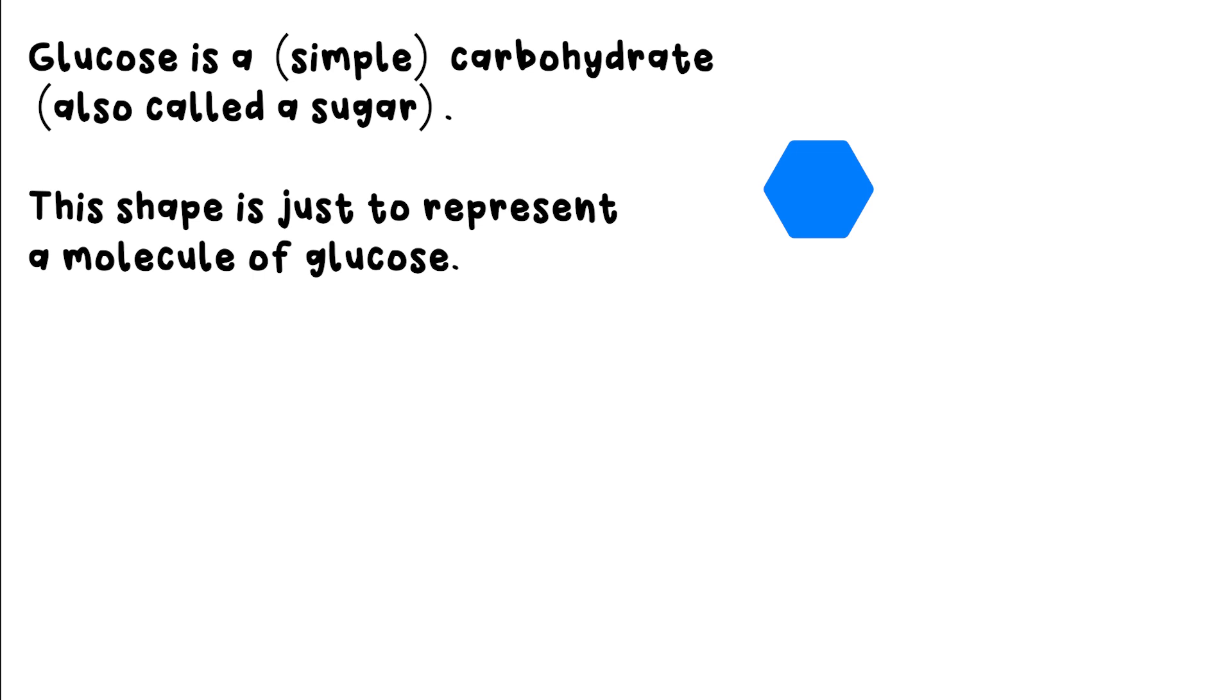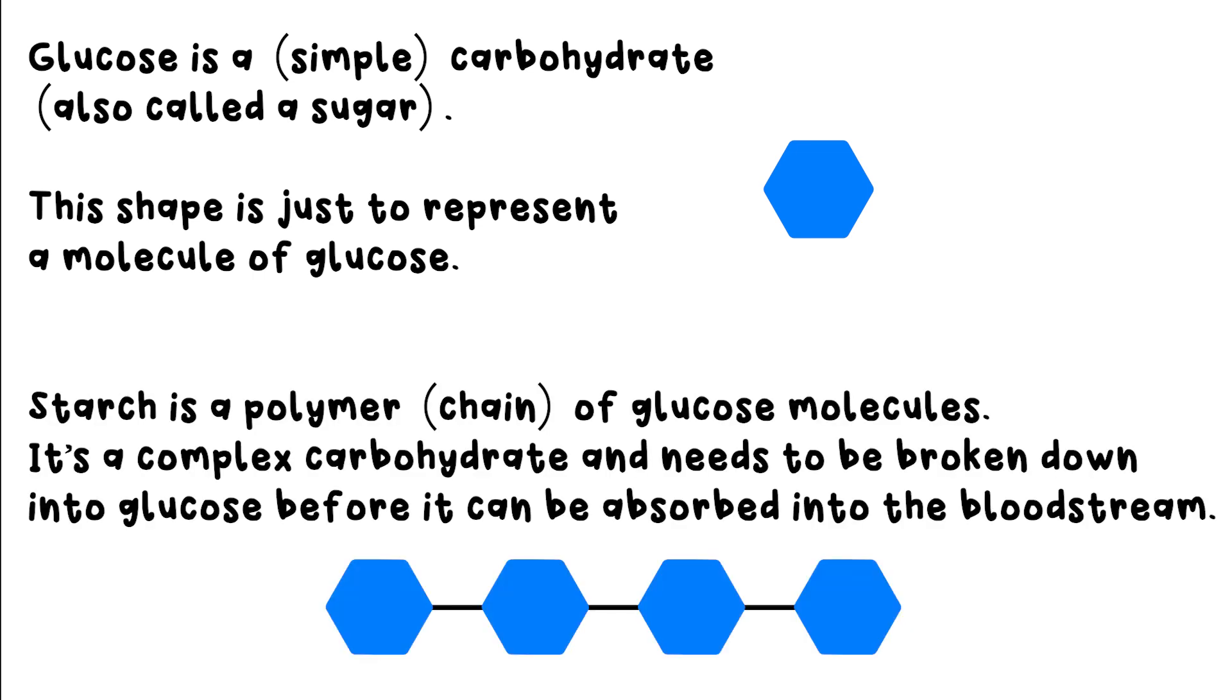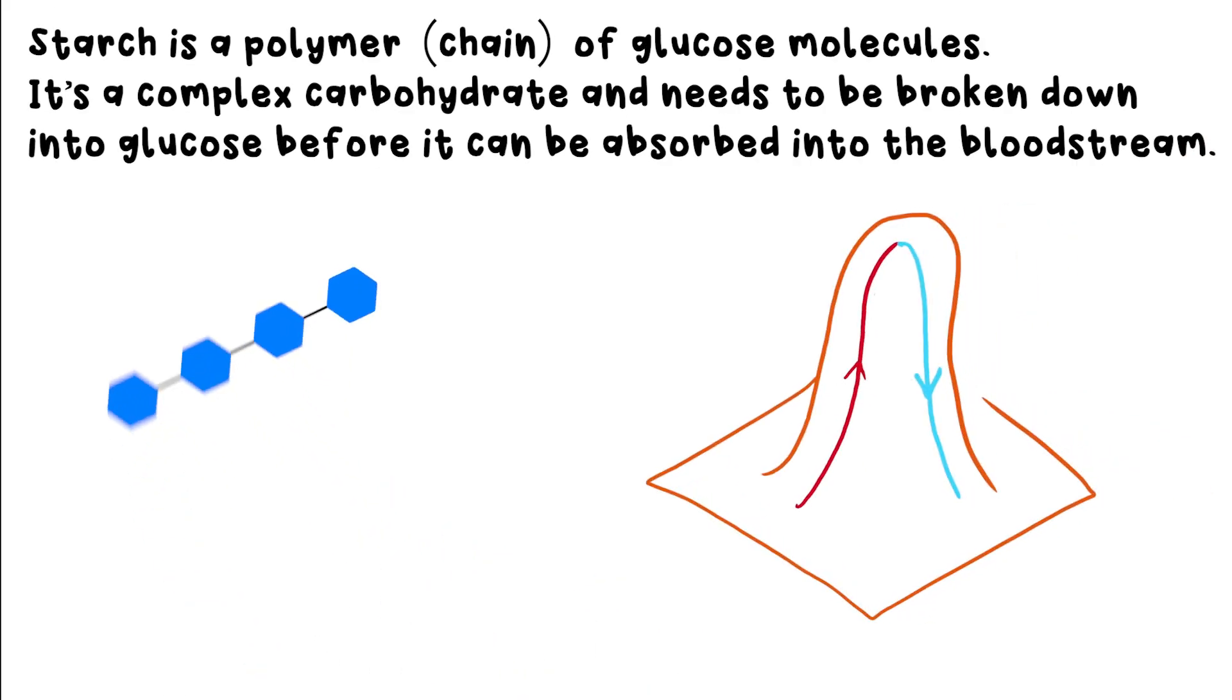Cereals or toast, however, contain starch. Starch is a long or complex carbohydrate. It's actually a polymer of glucose, or a long chain of glucose molecules bonded together. Because starch molecules are bigger, they can't be absorbed into the bloodstream in the small intestine. So they need to be broken down into glucose molecules first.